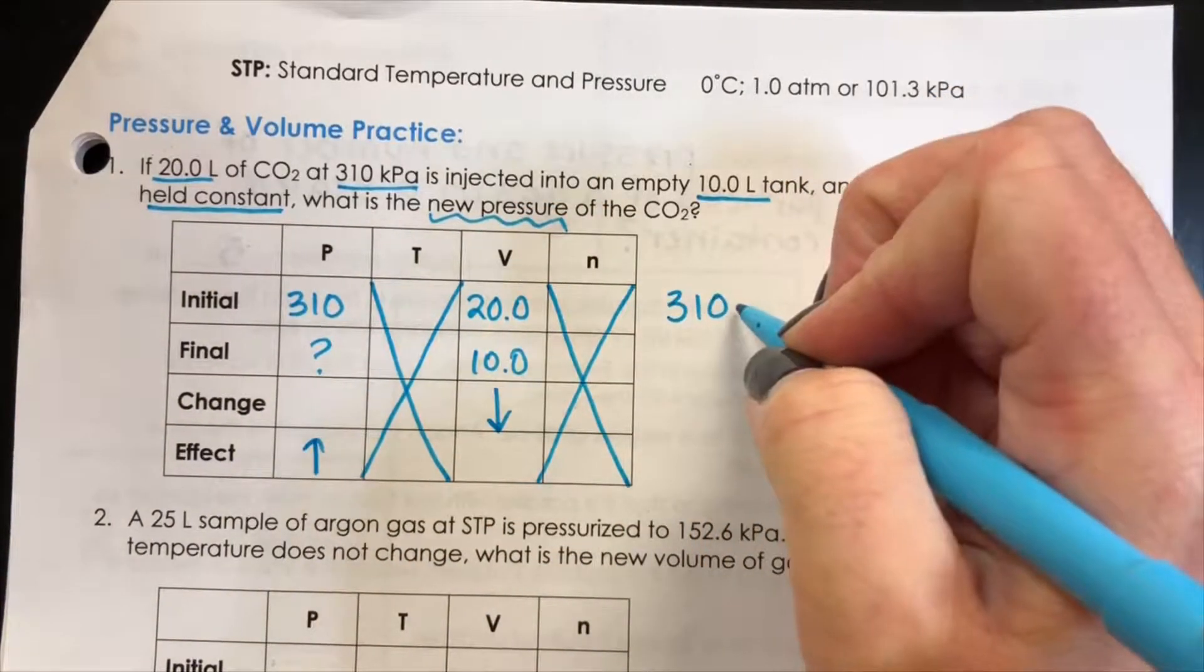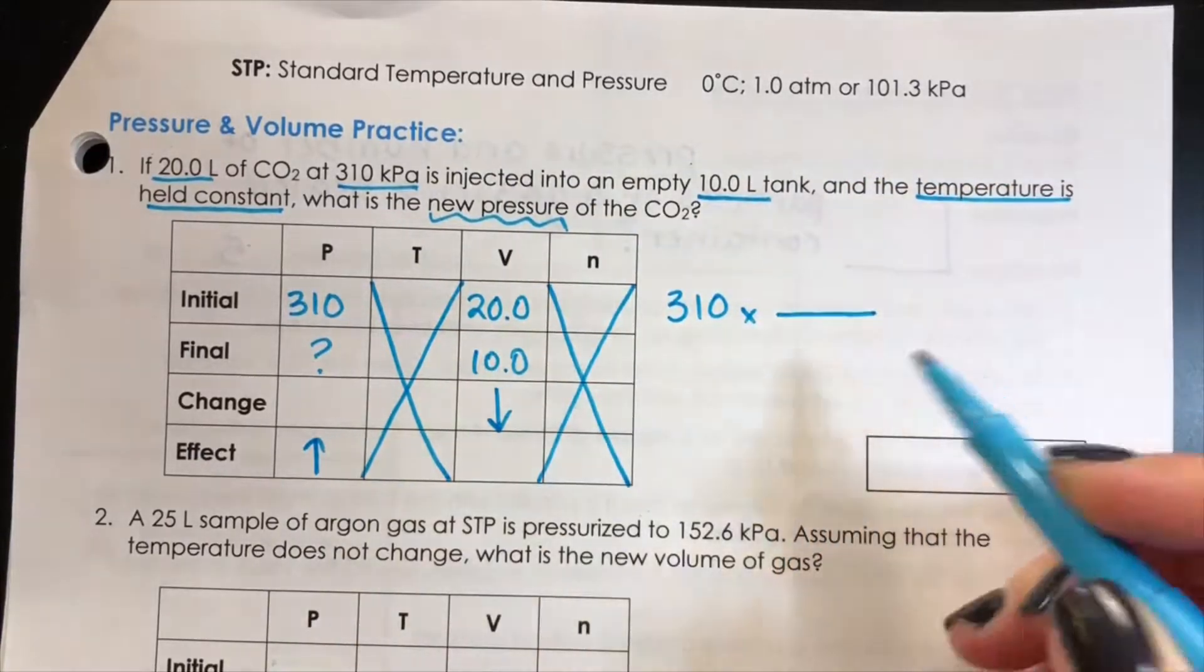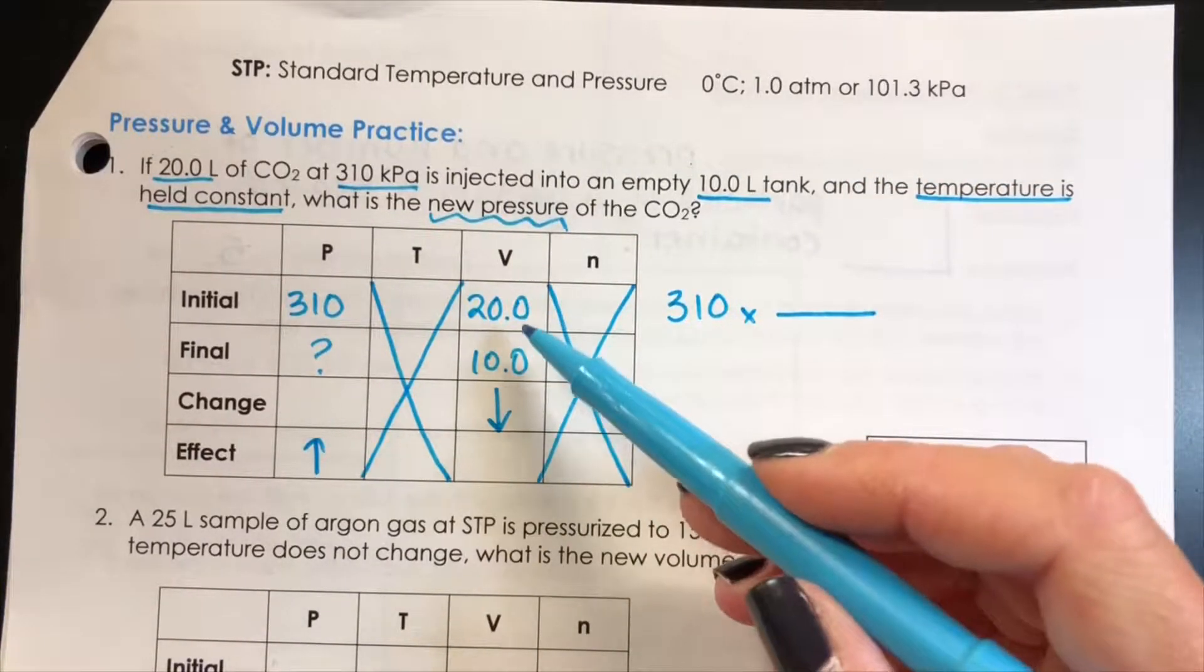We begin with the pressure that we're inducing the change in and then we're going to set up a proportion using the volumes.